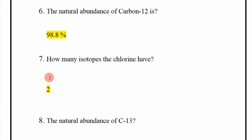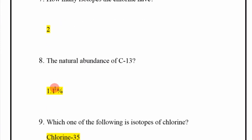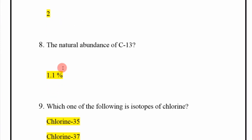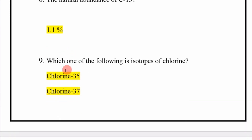Next: how many isotopes does chlorine have? The answer is 2. Next: what is the natural abundance of Carbon-13? The answer is 1.1 percent.